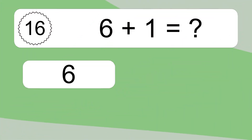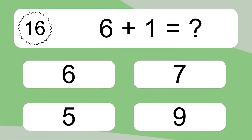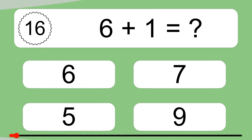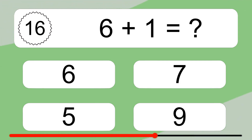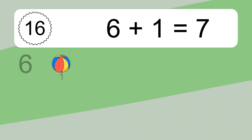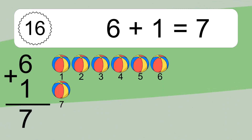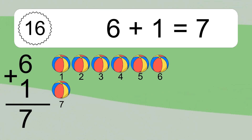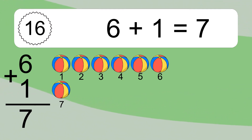6 plus 1 equals what? 6 plus 1 equals 7. Let's count it: 1, 2, 3, 4, 5, 6, 7.